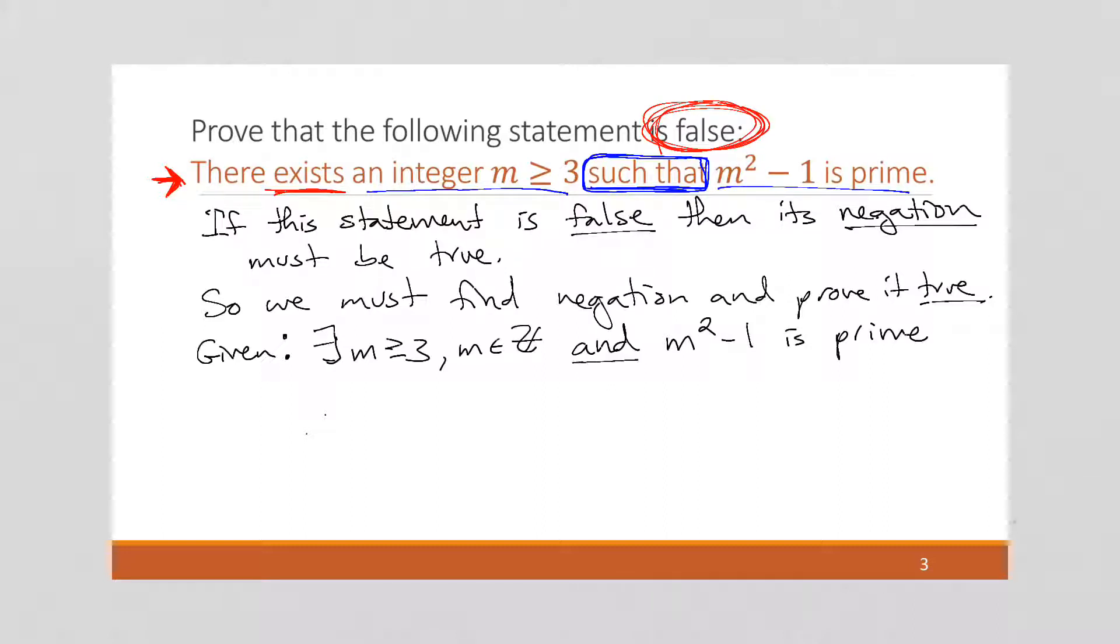So I rewrote it using an and, because this looks a lot more familiar. The statement, there exists something and something else is true, is the form of the negation of a universal conditional statement. So let's write the negation. So recall that if we have a for all x, if p of x, then q of x, the negation of this form, or statement, will be there exists an x such that p of x is still true and q of x is now false.